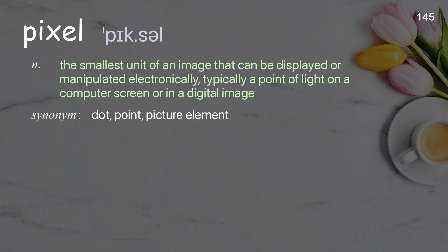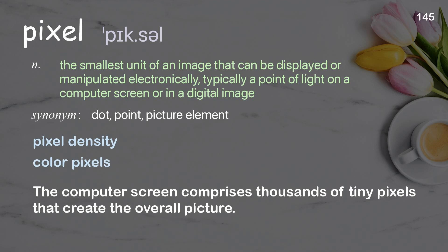Pixel: the smallest unit of an image that can be displayed or manipulated electronically, typically a point of light on a computer screen or in a digital image. Examples: pixel density, color pixels. The computer screen comprises thousands of tiny pixels that create the overall picture.